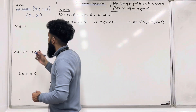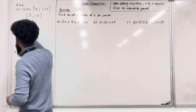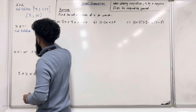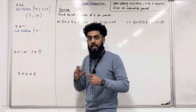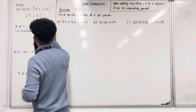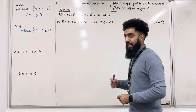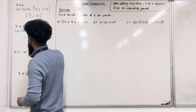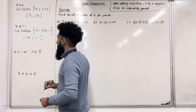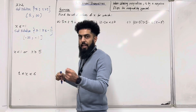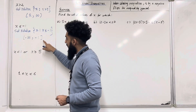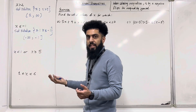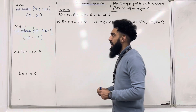Moving on to the next one: X is less than or equal to minus 1. In set notation, we have the set of values of X such that X is less than or equal to minus 1. The other way to write this is: curly bracket, minus infinity comma minus 1, square bracket — because X can be minus 1 or less, we use a square bracket to include minus 1, and a curly bracket because X cannot equal minus infinity.